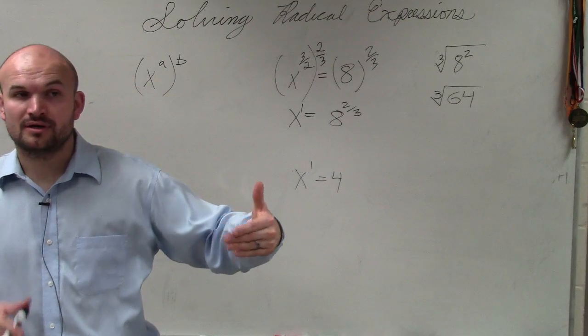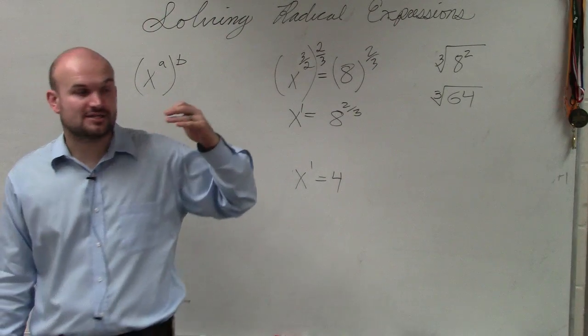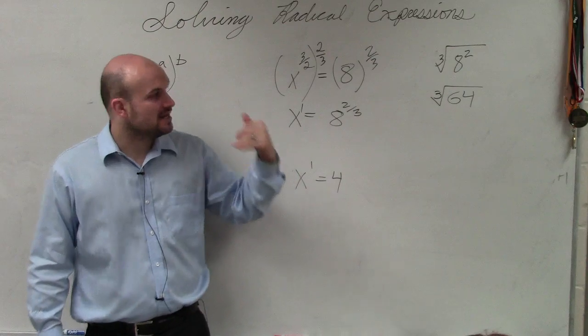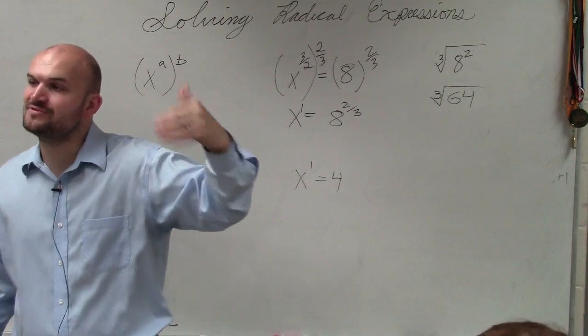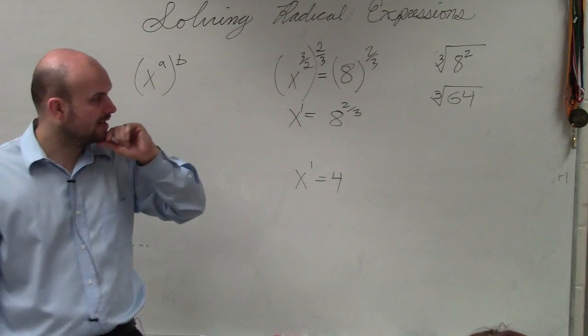8 times 8 is 64. So square root of 64 is 8, but the cube root is actually 4, because 4 times 4 times 4 is 64.